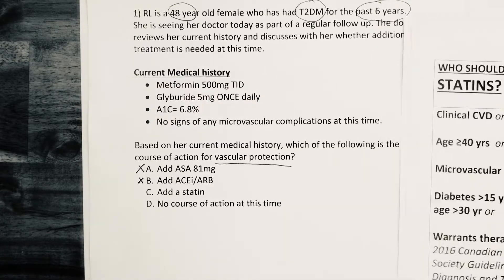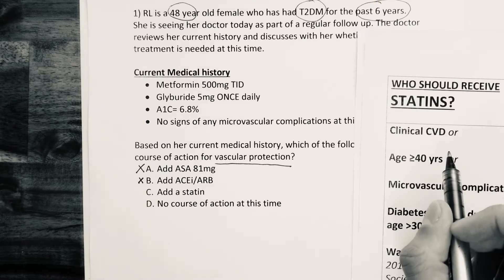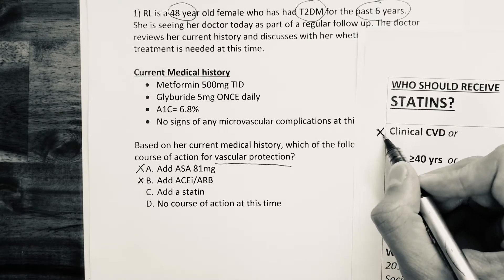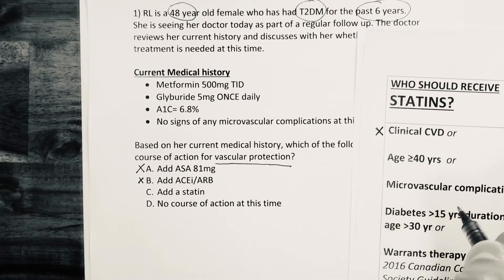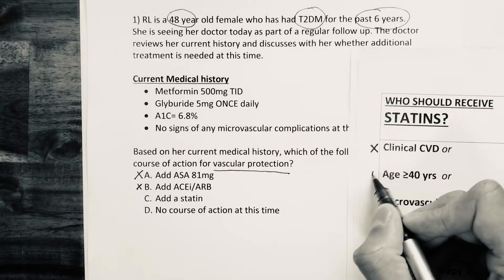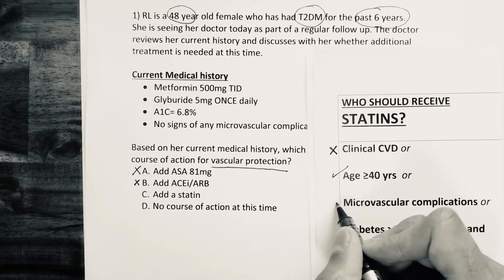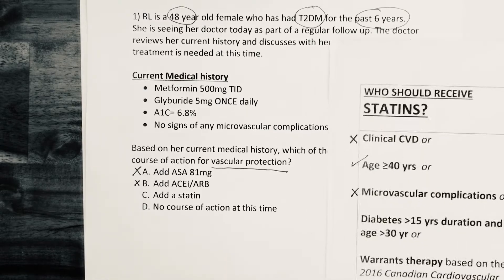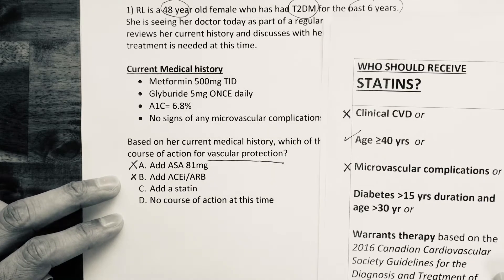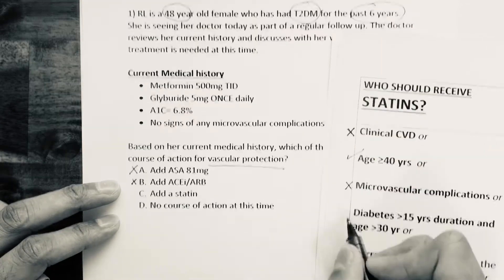Next choice: add a statin. Here's the checklist for who should receive a statin. Does she have clinical cardiovascular disease? No — rule that out. Is she 40 years or older? Yes — she is 48, so that gets a check mark. Does she have microvascular complications? No — rule that out. Has she had diabetes for greater than 15 years and is older than 30? She is older than 30, but diabetes duration is only six years — rule that out.